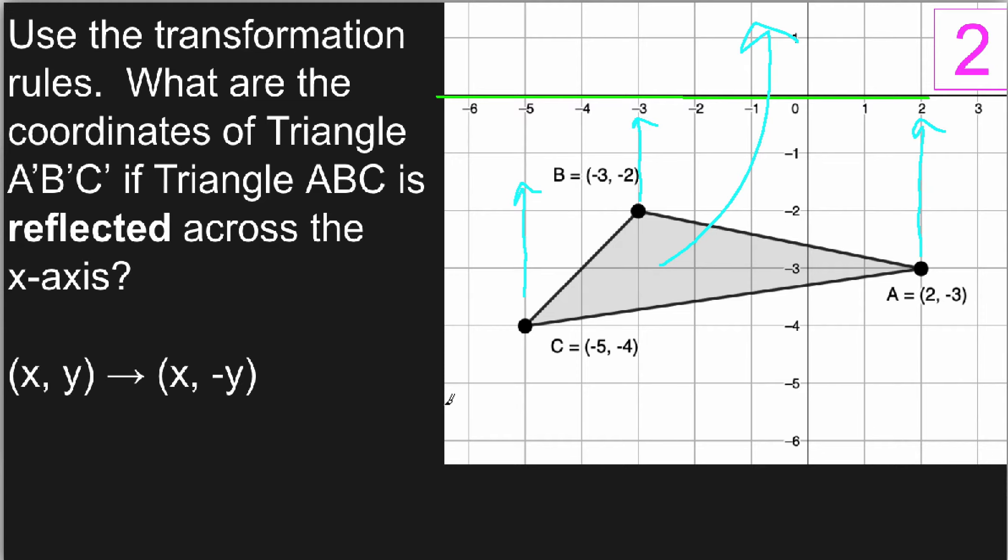An easy way for me to figure out where they will land is to use this easy equation. x, y transforms to x, negative y. This means that I plug in the values for A, B, and C into this equation and find out where A prime, B prime, and C prime are.